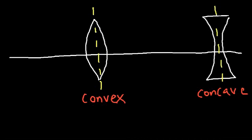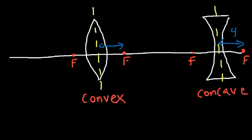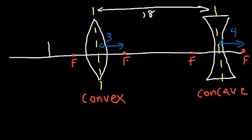Let's say that the focal length for the convex lens is 3 centimeters. And the focal length for the divergent lens, let's choose a value of 4 centimeters. So the distance between the center of the divergent lens and the focal point — that's the focal length — will be 4, and this distance will be 3. Now, let's say that the distance between the two lenses is 18 centimeters, and let's place the object at a distance of 6 centimeters with a height of 2 centimeters.